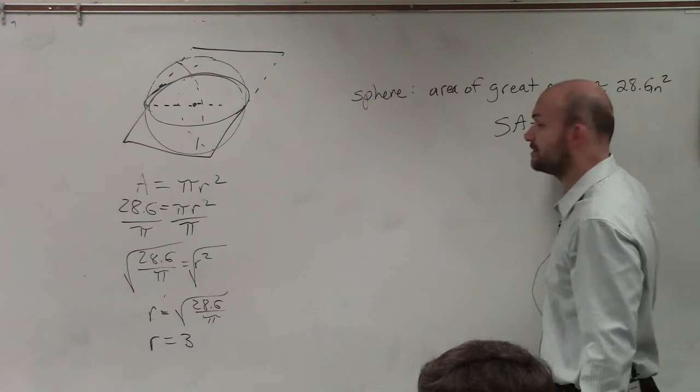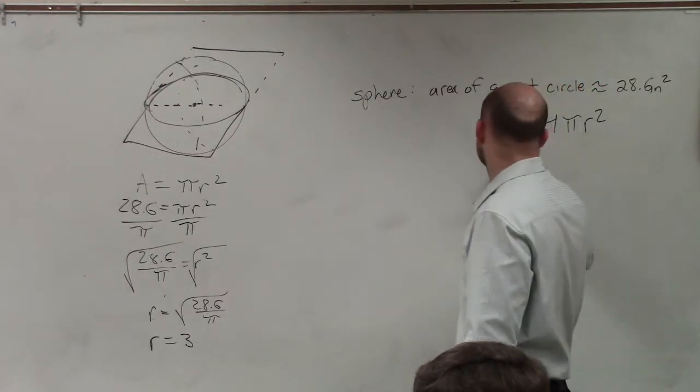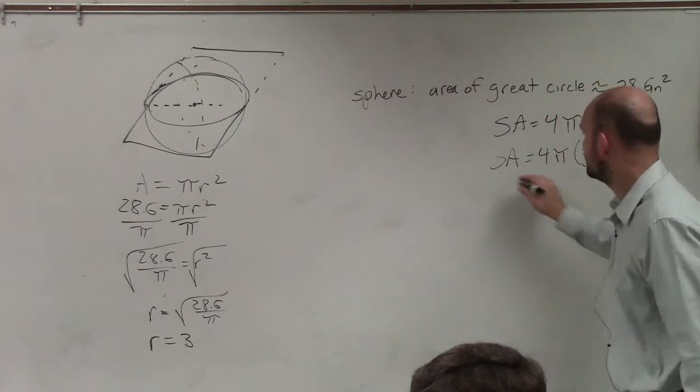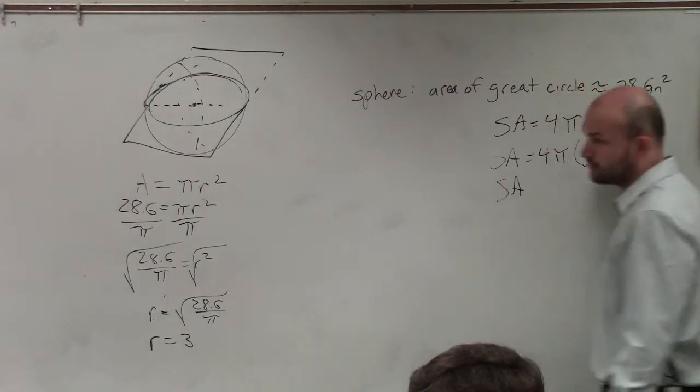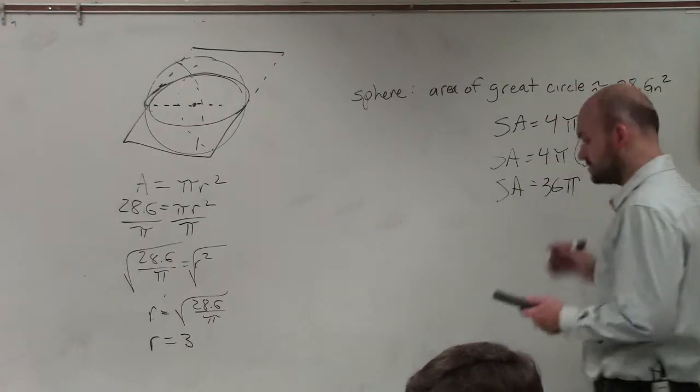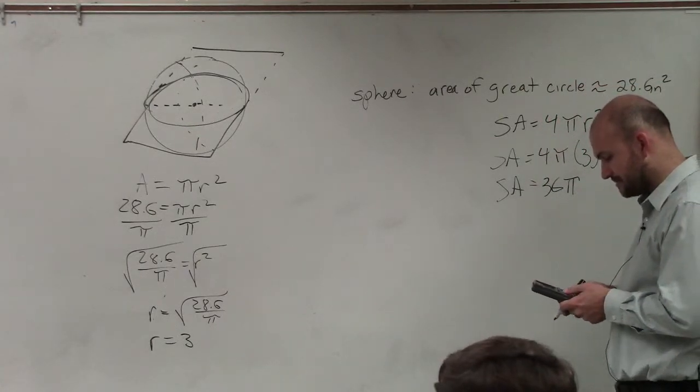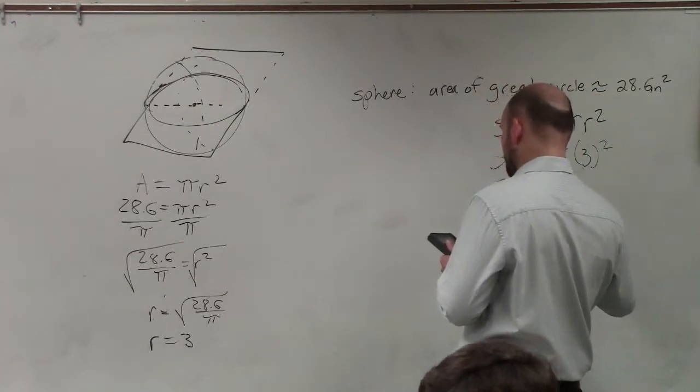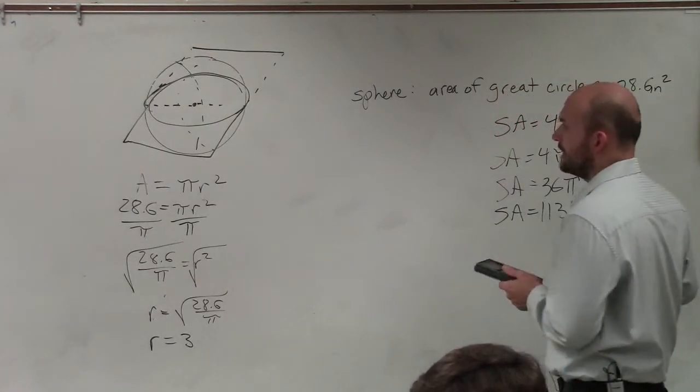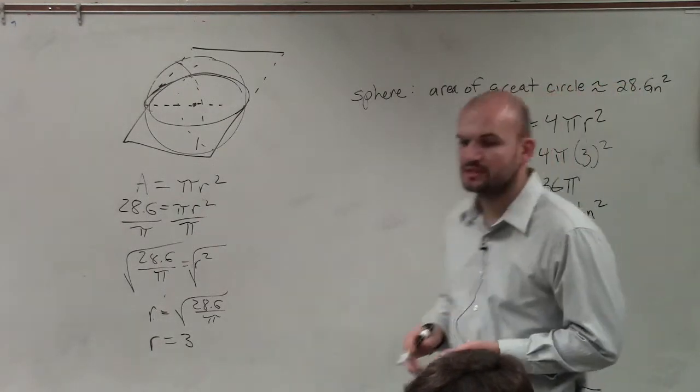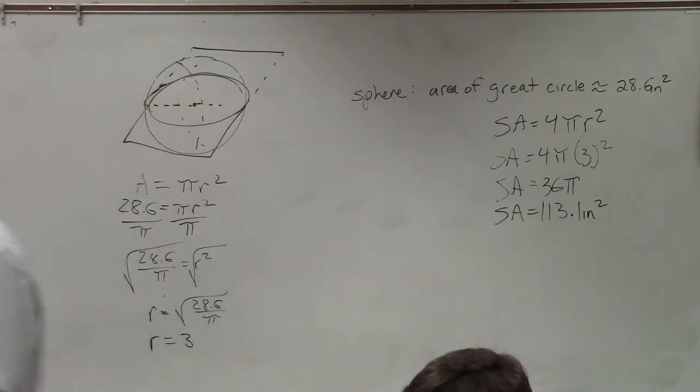So now to figure out the surface area, surface area equals 4 pi times 3 squared. 3 squared is 9. 9 times 4 is 36. Then I simply just do 36 times pi. And surface area equals 113.1. And this was in inches squared since we're dealing with surface area. OK?